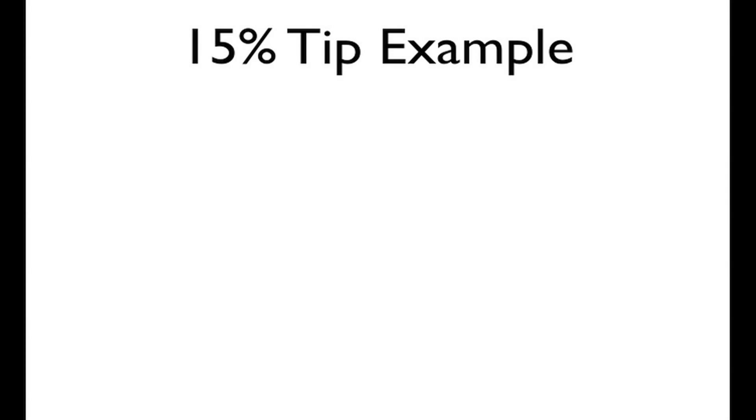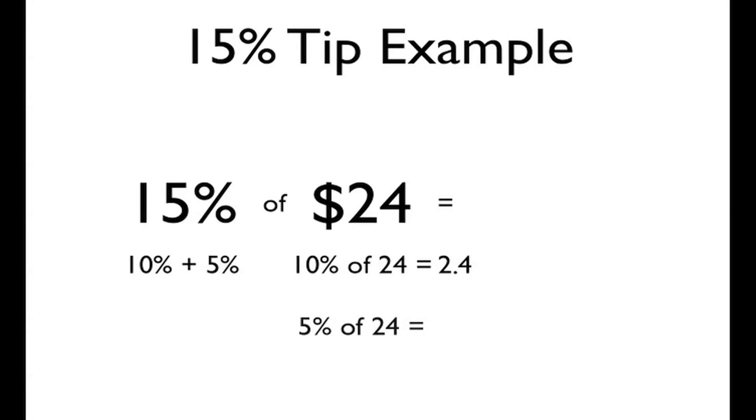15% tip example. Tip usually seems to be about 15%, at least in the part where I live. And a lot of people use calculator apps. Well, you won't have to after this. 15% is just 10% plus 5%. And we already know how to solve those. So 10% of 24. Well, take the decimal place, move it over one gives us 2.4. And 5%, well, 5% is just half of 10%. So we divide it by two to get 1.2.